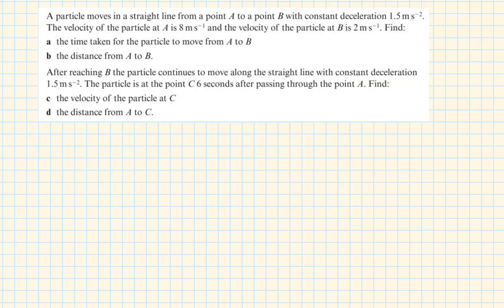A particle moves in a straight line from point A to point B with constant deceleration 1.5 meter per second squared. The velocity of the particle at A is 8 meter per second and the velocity of the particle at B is 2 meter per second. Find the time taken for the particle to move from A to B. In mechanics questions, it's always advisable to start with a diagram.